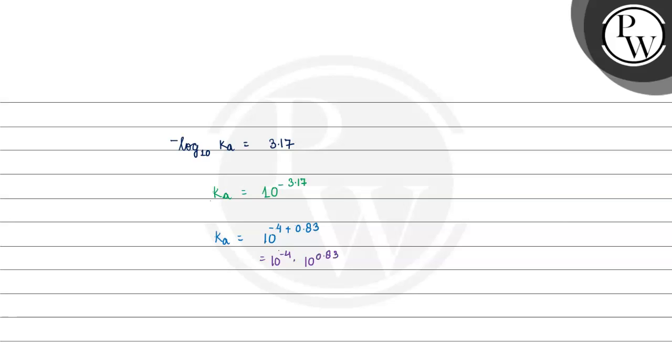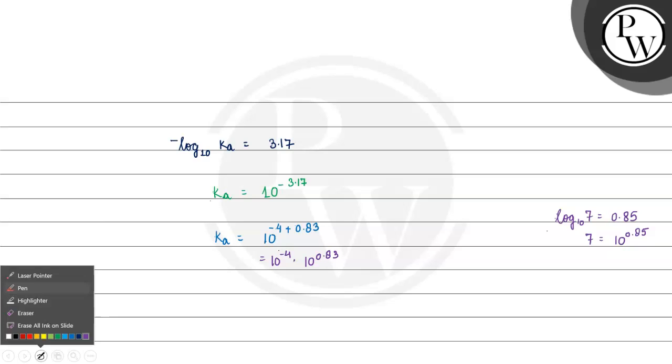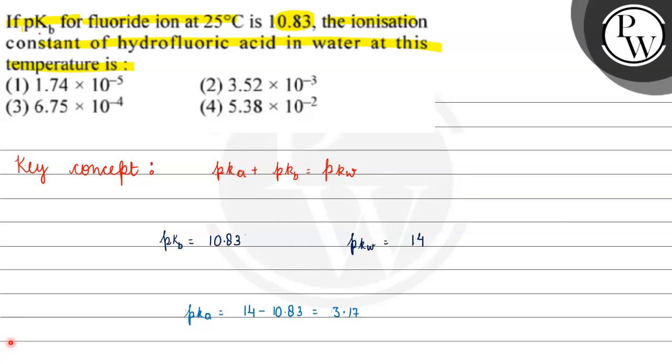If we talk about the value of 10 raise to the power 0.83, then see, we have log with the base 10. What is the value of 7? It is equal to 0.85. The value of 7 will be equal to 10 raise to the power 0.85. If we talk about the value of 10 raise to the power 0.83, then the value is less than 7. So, which option is our option? Option 3.